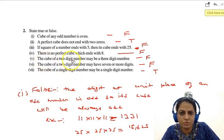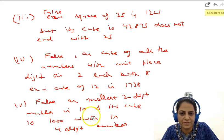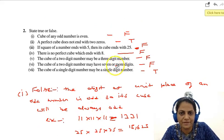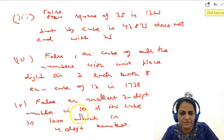Now next part is fifth part. The cube of a 2-digit number may be a 3-digit number. So this is actually false. As smallest 2-digit number is 10 and the cube of 10 is 1000. And they are telling it may be a 3-digit number but... Oh sorry, this is not a 3-digit number, sorry, it is a 4-digit number. So it cannot be a 3-digit number. The cube of the smallest 2-digit number is a 4-digit number. So it cannot be a 3-digit number. So it is false.